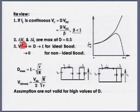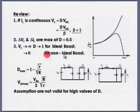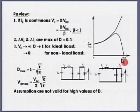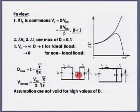This ripple is maximum at D equal to 0.5. When we discussed the ideal boost, we found that output voltage tends to infinity as D tends to 1 for an ideal boost. But in a non-ideal boost, the output voltage tends to 0 as D tends to 1. Why is there such a significant difference? It is because the assumptions we made while deriving the transfer function are not valid for high values of D.